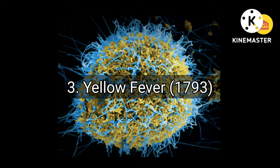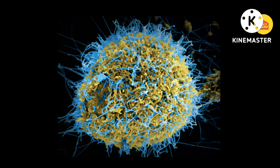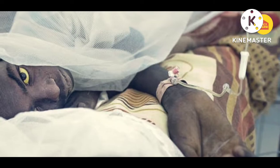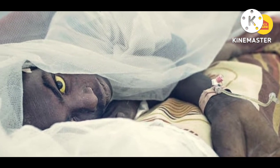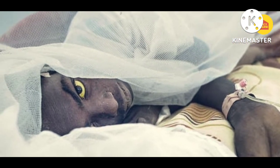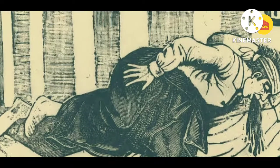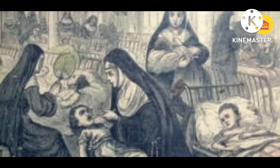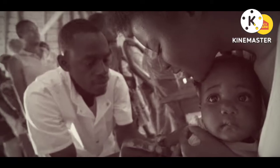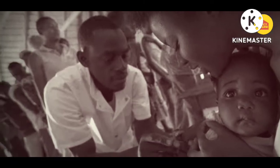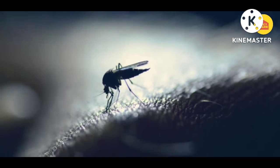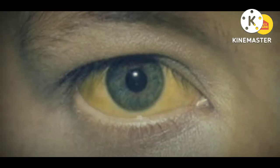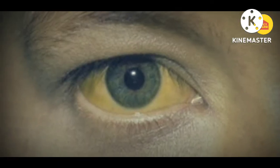Number 3. Yellow Fever, 1793. Yellow fever is a viral illness that is usually short-lived. In most cases, symptoms include fever, loss of appetite, nausea, back muscle pain, and headaches. It is an endemic viral infection in South America and sub-Saharan Africa, spread by female mosquitoes. The disease gets its name because it often discolors the sufferer's skin.